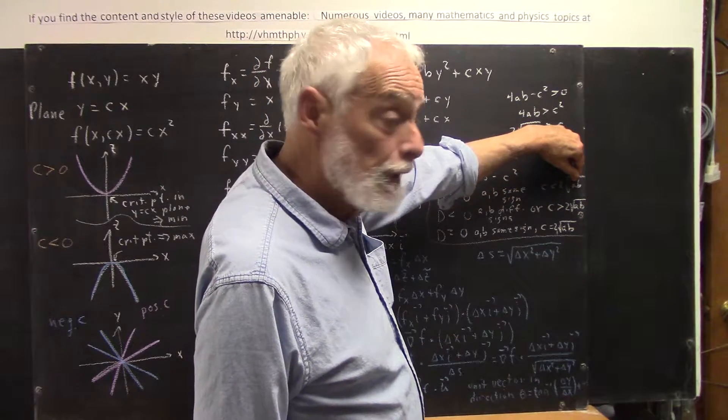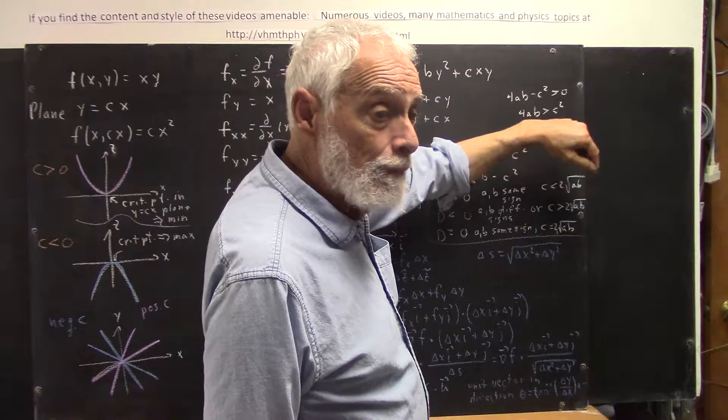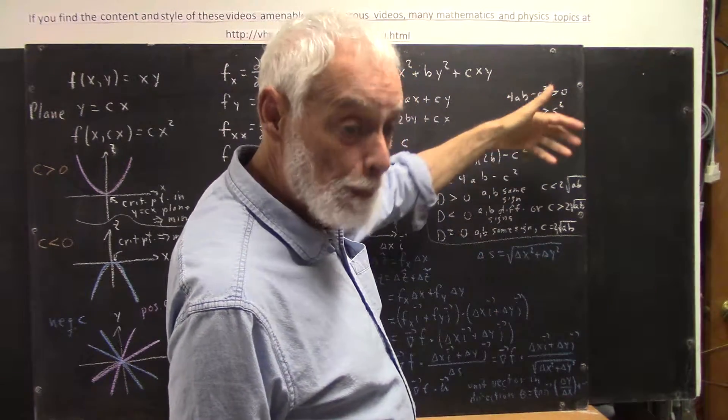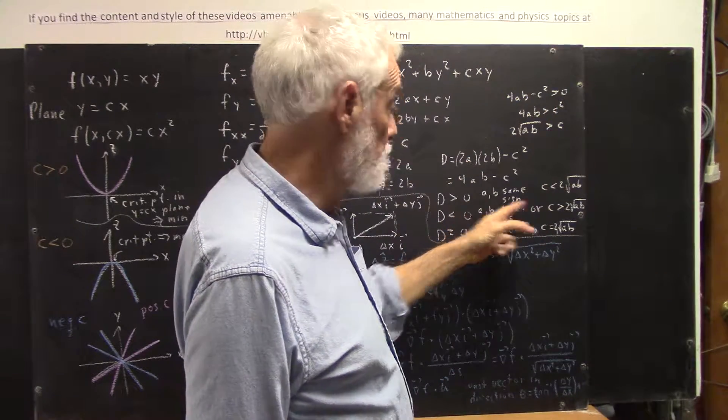ab can't be negative, which means that a and b can't have opposite signs. So a and b have to have the same sign.